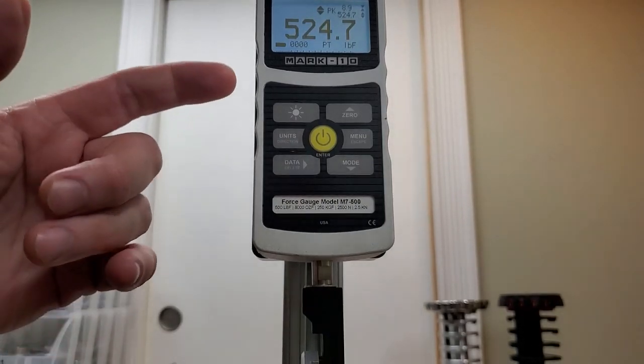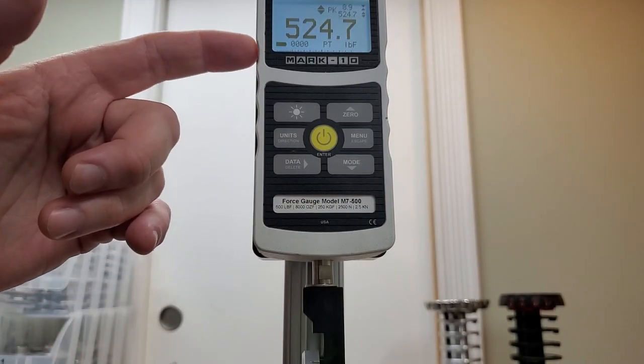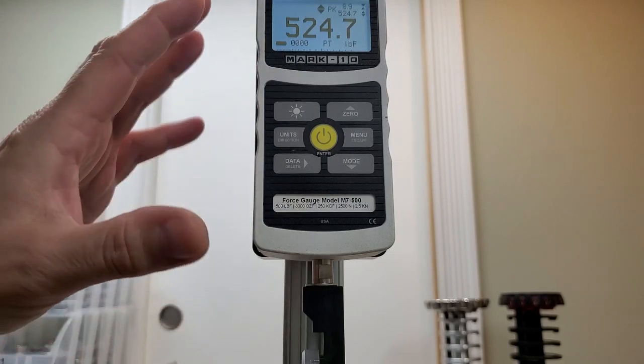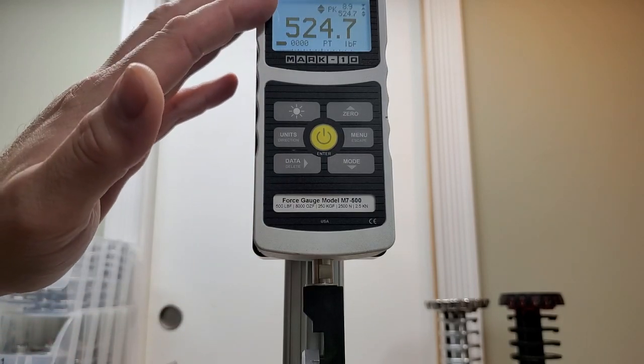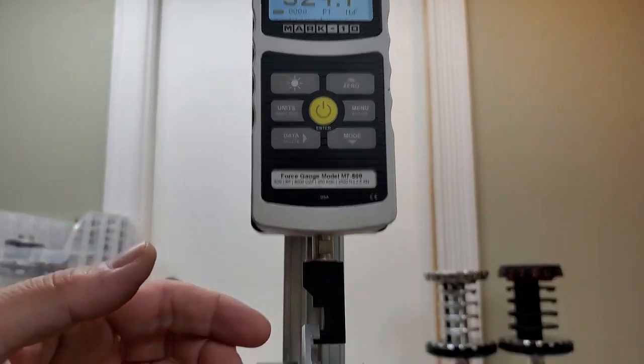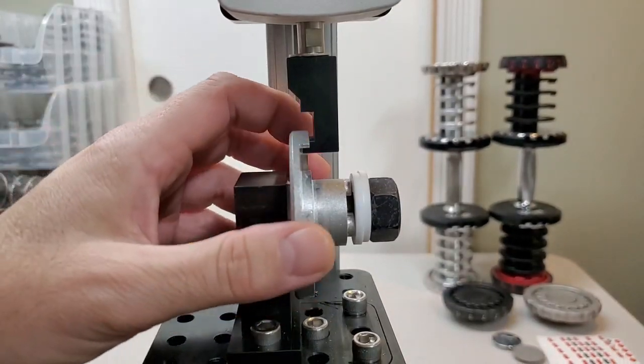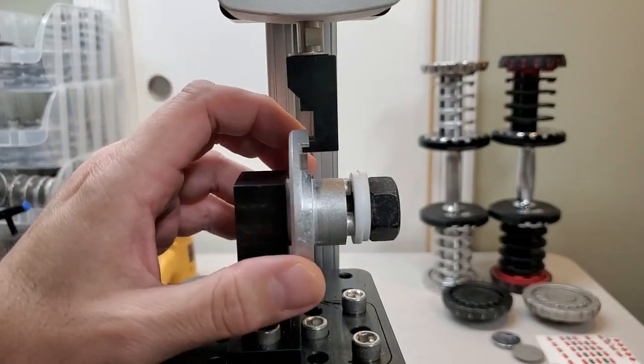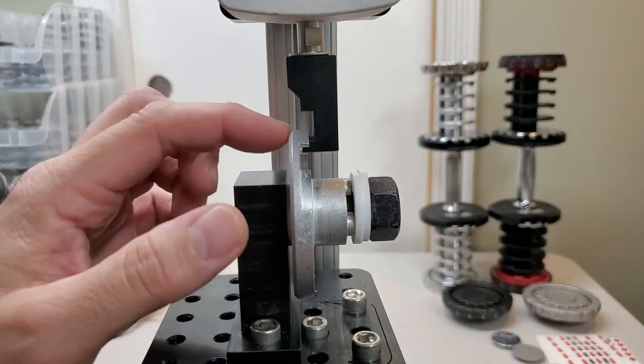Once again, we've exceeded the pound force of this gauge, 524. And it could have kept going. It's not going to slip off there. It's not going to flex. Your weight plate is not going to fall out of your dumbbell when one of these are mounted.